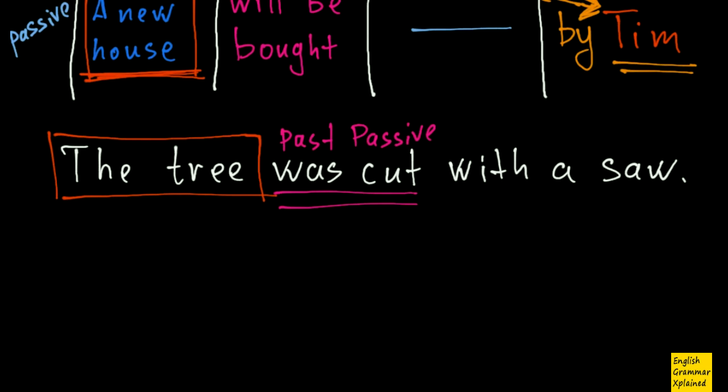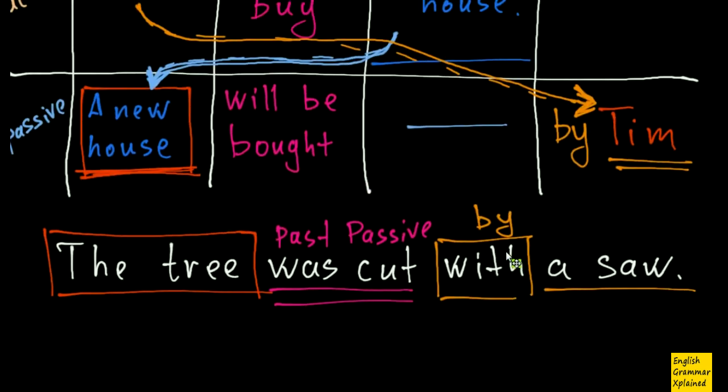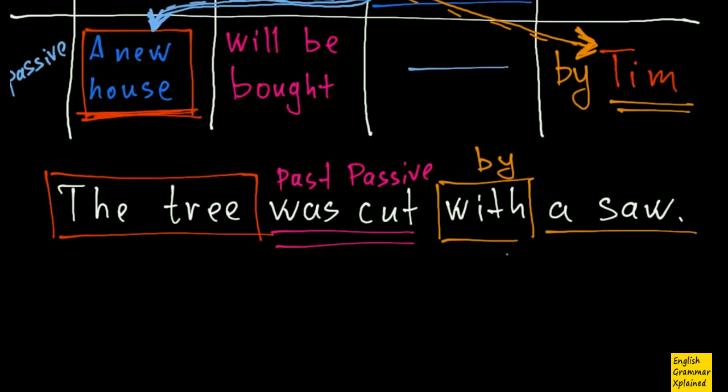And then I have this mysterious preposition, with, instead of by. And then I have agent. What's the point? Why don't we put here by, just like before, just like here? Well, here I cannot put by because here I have a tool. And a saw, well, it doesn't do anything without some person, without a man or a woman or whatever. Somebody has to cut this tree with a saw. This saw itself doesn't do any action.